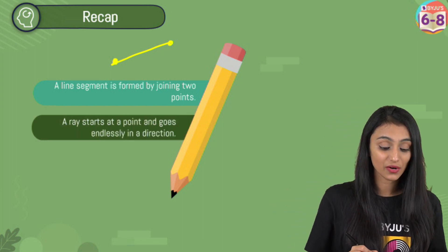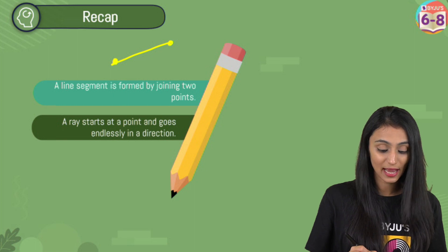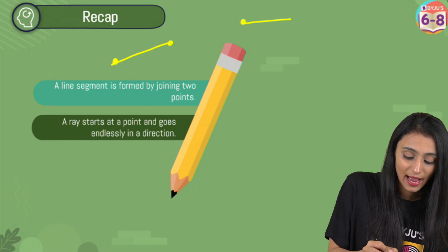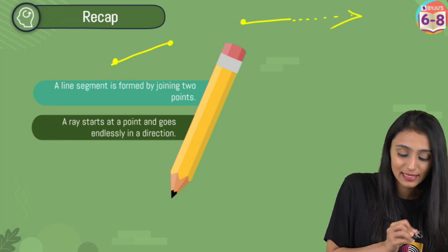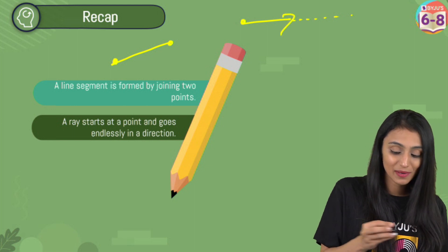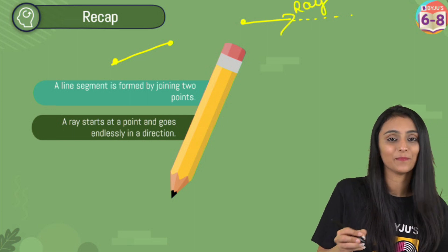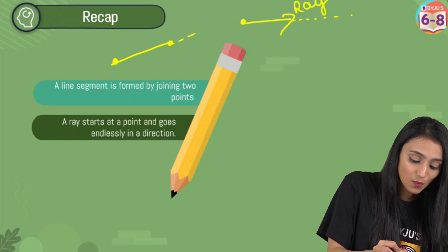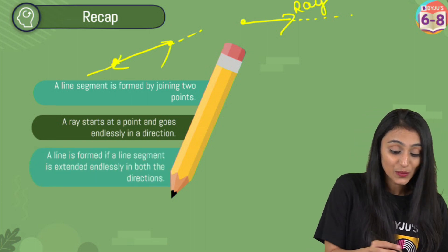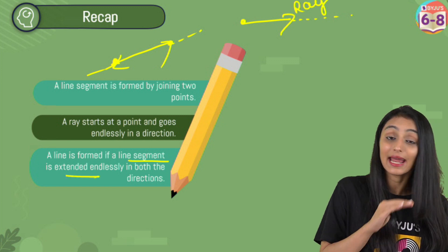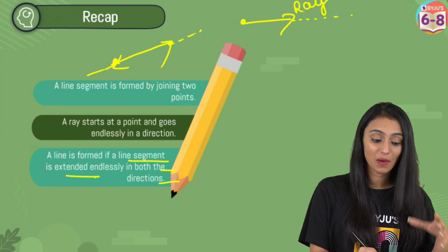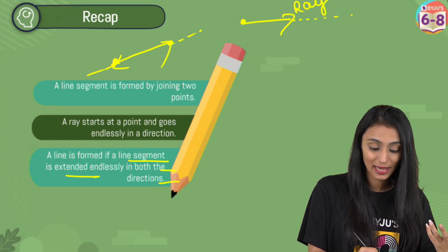Next, we have a ray, which starts from a point and goes endlessly in one direction. Let's suppose we have this point here, and it is going endlessly in this direction — we basically call this a ray. Now, if I extend this in both directions, we call it a line, which is formed if a line segment is extended endlessly in both directions. So this was about a line segment, a ray, and a line.